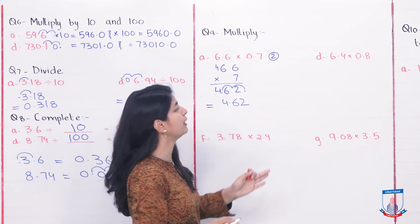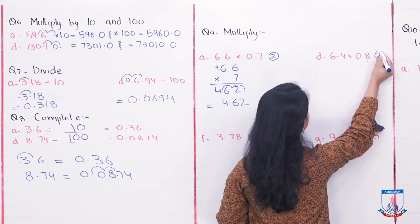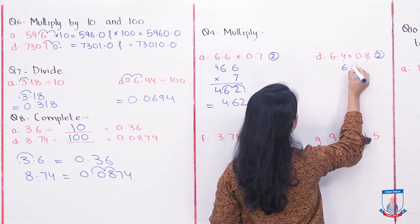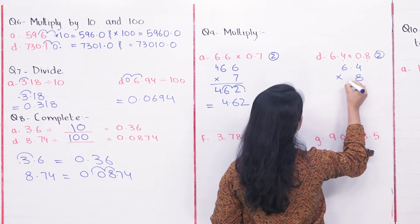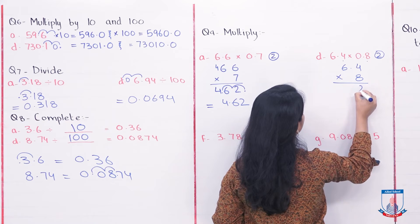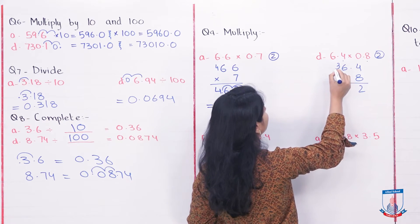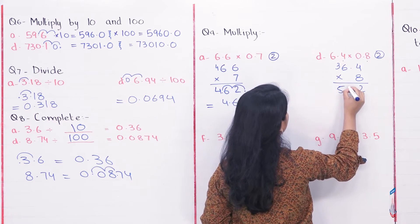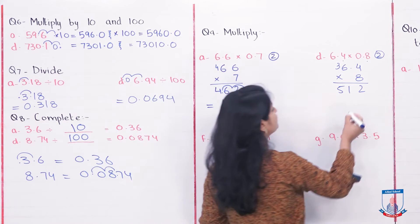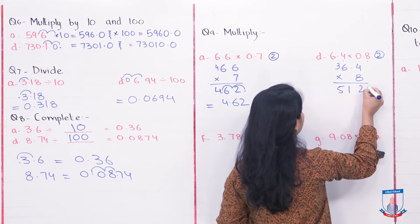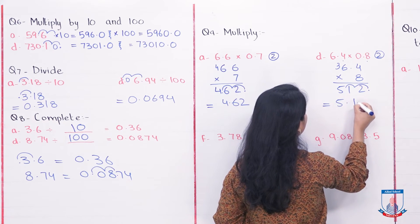If we look at the next part — 1 and 2 are 2 decimal places. So: 6.4 into 8. 8 fours are 32, 3 carry. 8 sixes are 48 plus 3 is 51. So, 512 is your answer. You have to incorporate 2 decimal places. What is the answer? 5.12.